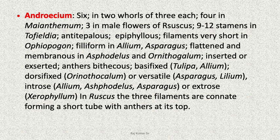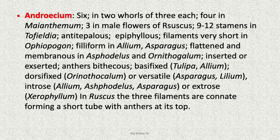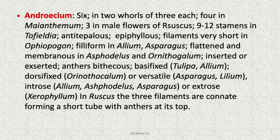The androecium consists of 6 stamens in 2 whorls of 3 each; 4 in Maianthemum; 3 in male flowers of Ruscus; 9 to 12 stamens in Tofieldia. Anthers are epiphyllous. Filaments are very short in Ophiopogon, filiform in Allium and Asparagus, flattened and membranous in Asphodelus and Ornithogalum, inserted or exerted. Anthers are bithecous, basifixed as in Tulipa and Allium, dorsifixed in Ornithogalum, or versatile as in Asparagus and Lilium. They show introrse dehiscence, for example in Allium, Asphodelus, Asparagus, or there can also be extrorse dehiscence as in Xerophyllum. In Ruscus, 3 filaments are connate forming a short tube with anthers at the top.